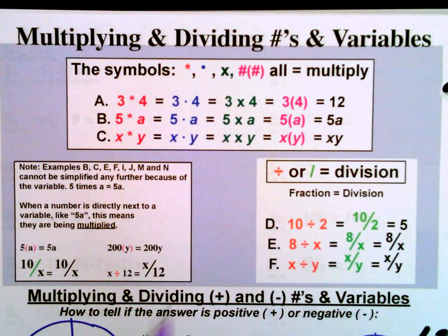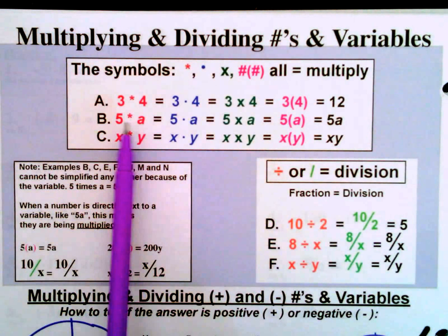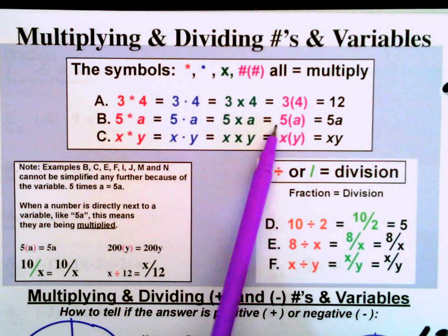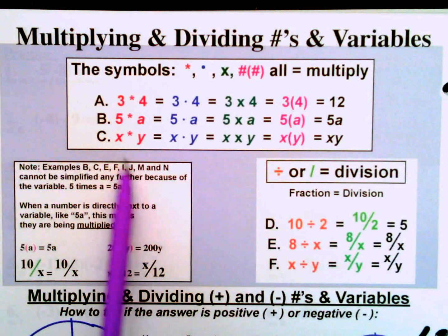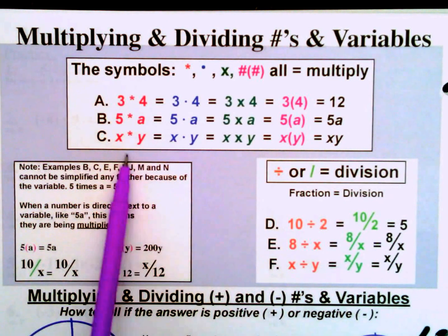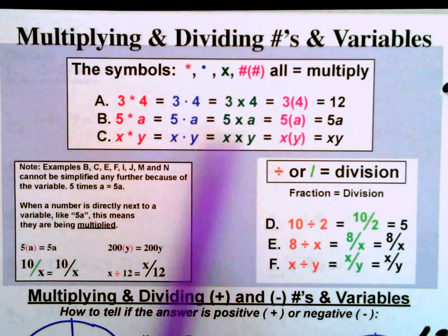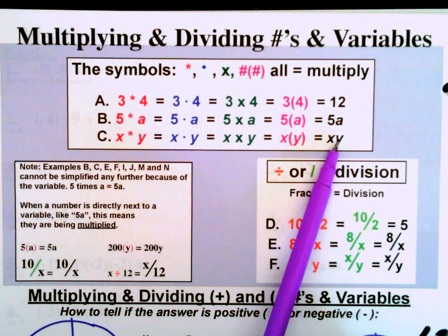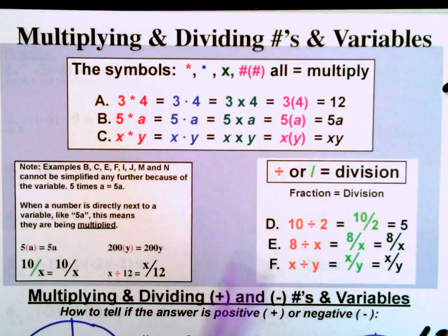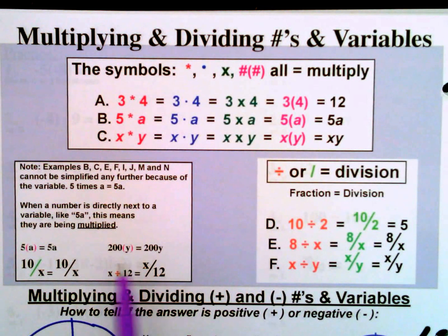If you have a variable times a number, it ends up just being the number and variable written next to each other. So five times a, in any of these situations, is just 5a. The same applies with different variables multiplied together — X times Y is just XY. It cannot be further simplified.